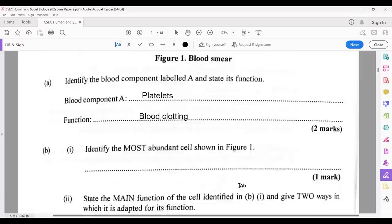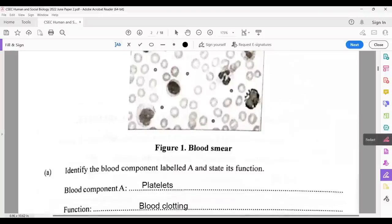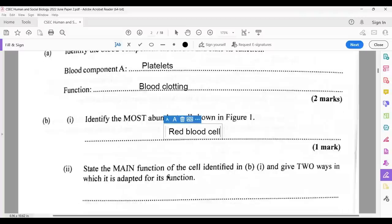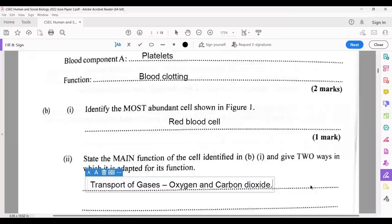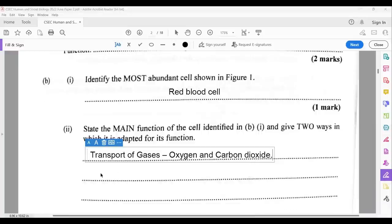Identify the most abundant cell shown in figure one. Well, the most abundant cell, and if you do a simple count, you don't really need to count. Just looking at it, you will see it as red blood cells. State the main function of the cell identified in B1 and give two ways in which it is adapted to its function. The cell identified in B1 is red blood cells. What do they do? They transport gases. Carbon dioxide and oxygen. Carbon dioxide needs to go to the lungs to be expelled. Oxygen, you need to retrieve it from the lungs to send it around the body.